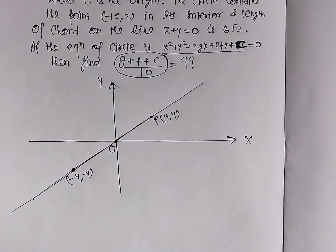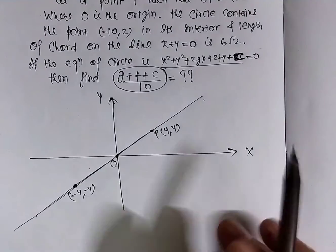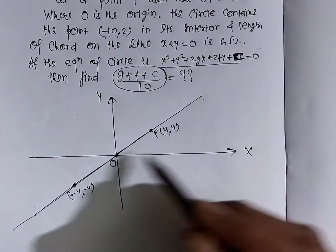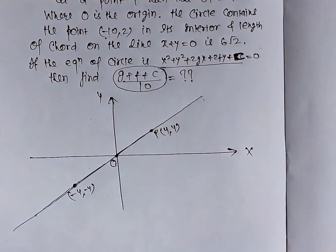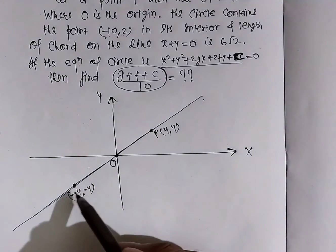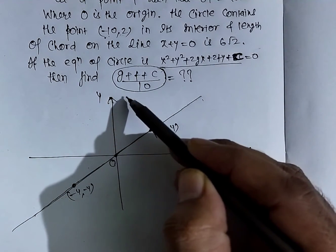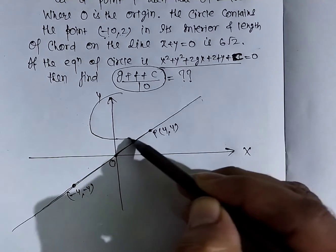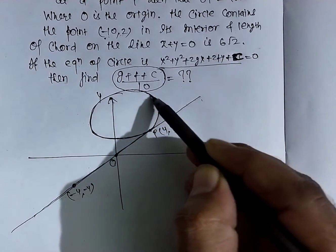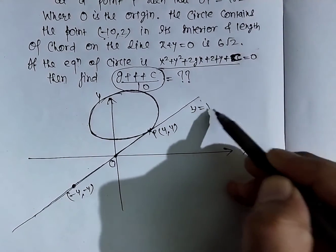Circle (4,4) point पर touch कर सकता है, लेकिन (-10, 2) second quadrant में है। अगर circle ऐसे touch कर रहा है तो वो second quadrant तक नहीं पहुंचेगा। तो यह पहला case लेते हैं कि circle (4,4) point पर y = x को touch कर रहा है।